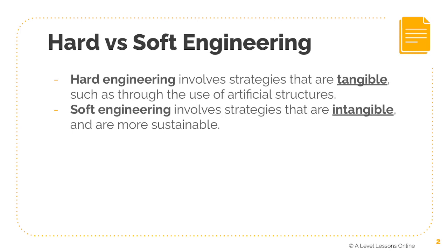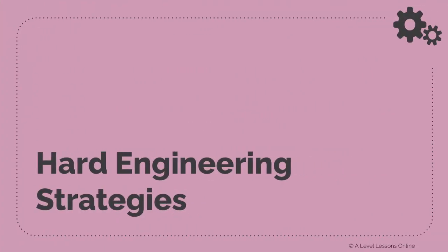We're going to be looking at two types of strategies within flood management: hard engineering strategies and soft engineering strategies. Hard engineering involves strategies that are tangible — we're looking at artificial structures that can be seen and are there to physically protect against a flood. Soft engineering strategies are intangible, more sustainable, and usually policy-based. They don't physically prevent a flood but are more of initial responses and behind-the-scenes strategies that help in managing a flood.